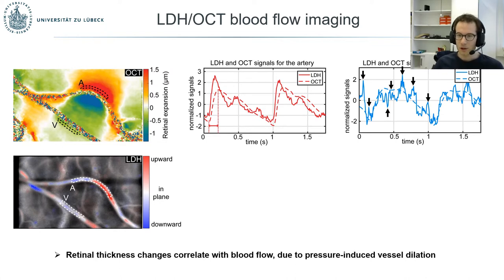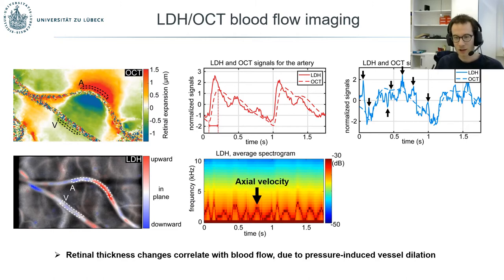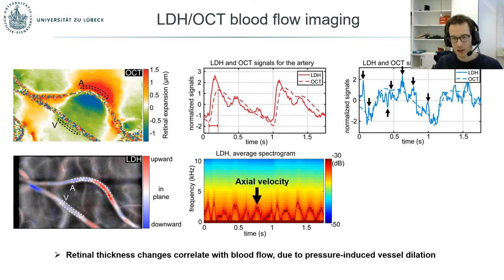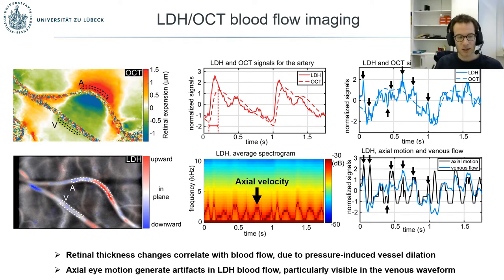However, we were not totally satisfied, as some deviations between LDH and OCT signals remained, especially in the venous signal. We wondered whether this was due to fast blood flow fluctuations undetectable with OCT, or LDH artifacts. It turned out to be the latter: the deviations were correlated with the axial velocity of the eye, which can be very precisely monitored with LDH. The axial motion of the eye is not totally suppressed by the eigendecomposition in LDH, and generates artifacts particularly visible in the venous waveform because its amplitude of variations is lower than in the arterial signal.